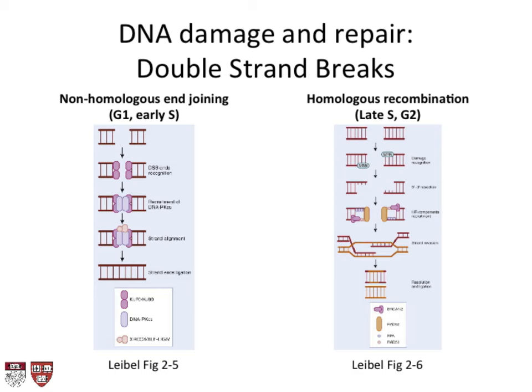Non-homologous end-joining dominates in G1 and early S phase when you don't have a second copy of DNA. Homologous recombination is used in late S and G2. The most resistant cell phase to radiation would be late S and early G2, when homologous recombination can perfectly repair damage. When the cell gets into late G2, near mitosis and committed to dividing, a double-strand break will cause death. In early S or G1, damage that can't be properly repaired leads to errors when the cell tries to reproduce. So when the cell can perform good homologous recombination repair is when it's most resistant.